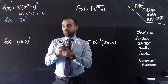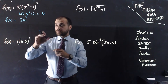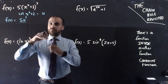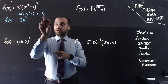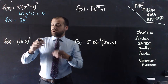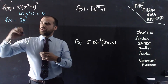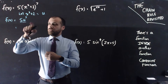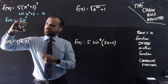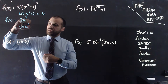Now, if I want to find the derivative of this function, what I need to do is find the derivative of 5u to the 7 and multiply it by the derivative of u. So let's do it all in one step here. The derivative of 5u to the 7 is 7 times 5, which is 35u to the 6.